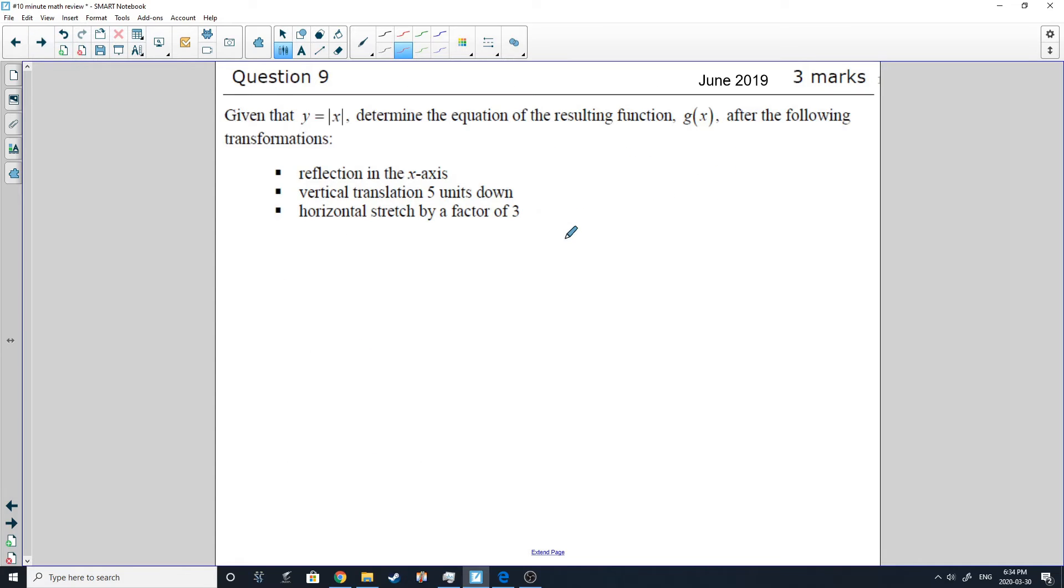Next question. Alright. So I started grabbing exam questions to review on. This is a tricky one from June 2019. We're taking the absolute value of X and we're going to be writing G of X. So that'll be the first thing to write. Then G of X is these transformations happening on the absolute value of X.